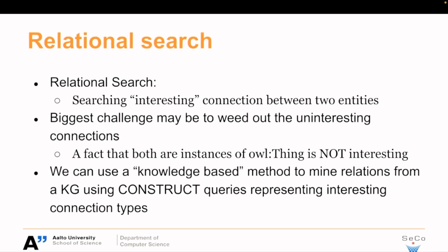We're not interested in that. But if two persons are related to each other, that might be interesting — or if they were students or teachers, that might be interesting. So we use this knowledge-based method, taking the main relations from the knowledge graph, and we use this to construct queries that represent interesting connection types.